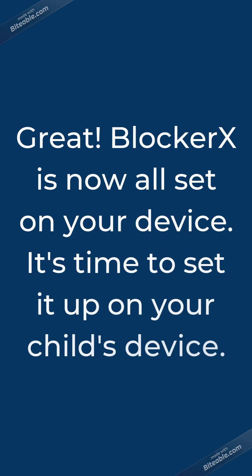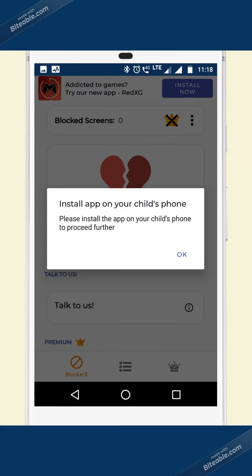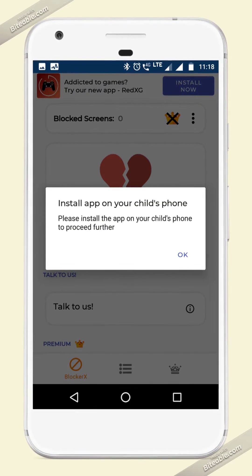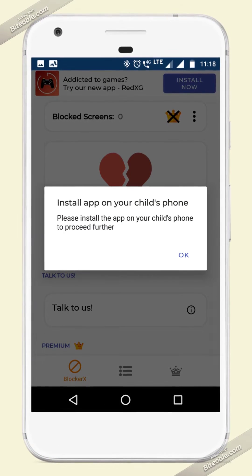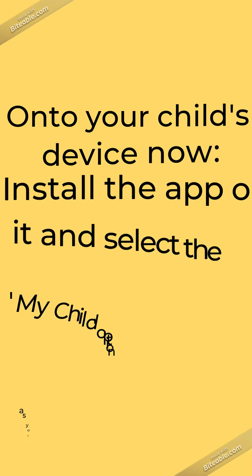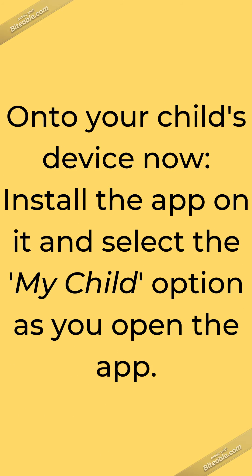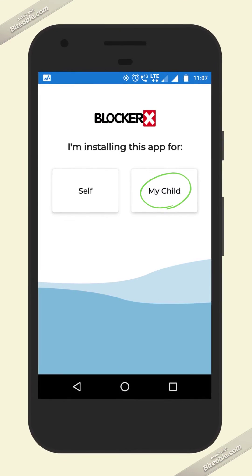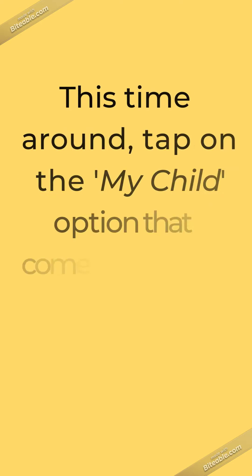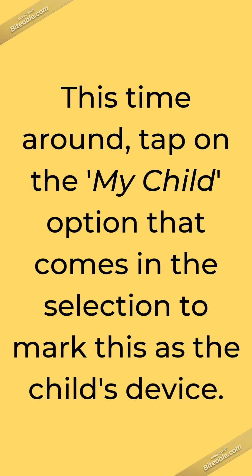Great! BlockerX is now all set on your device. It's time to set it up on your child's device. Install the app on it and select the 'My Child' option as you open the app. This time around, tap on the 'My Child' option that comes in the selection to mark this as the child's device.